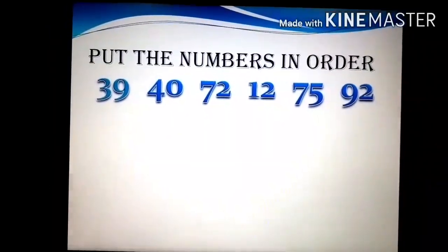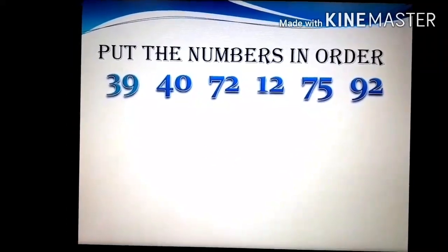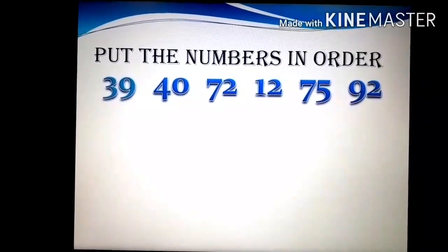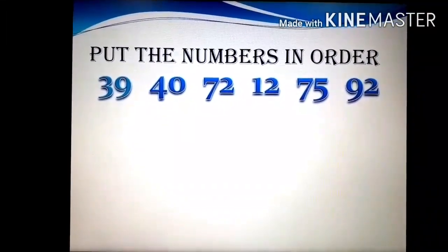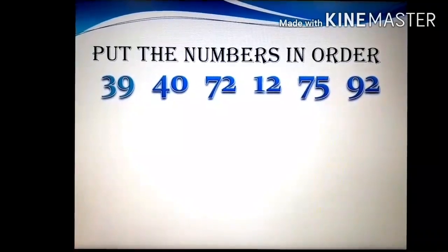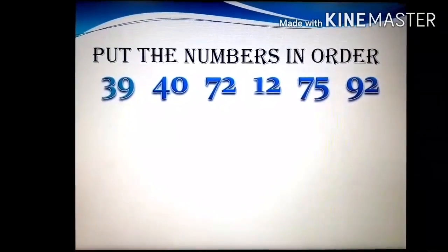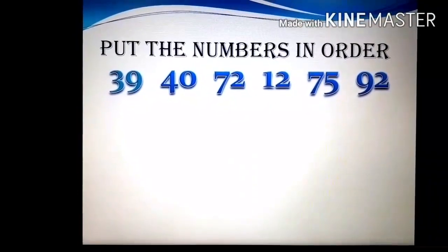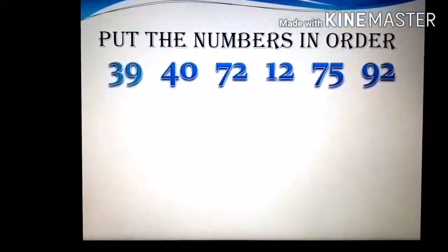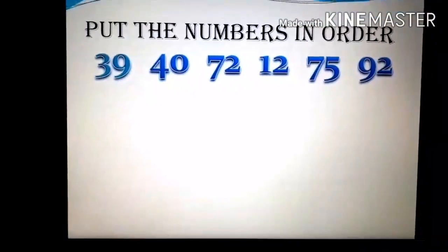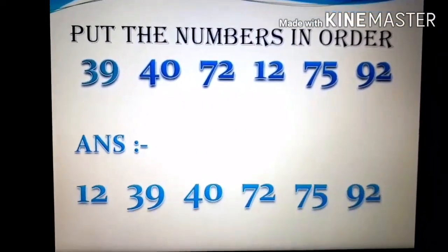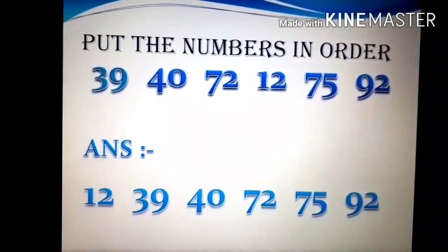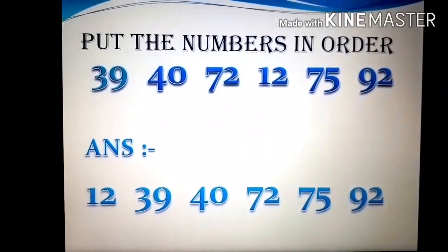Now see, if I want to put these numbers in order, how will I keep? The numbers are 39, 40, 72, 12, 75 and 92. Now, to keep the numbers in order, I will go from smallest to biggest number. So first, the smallest number is 12. The answer will be 12, 39, 40, 72, 75 and 92.